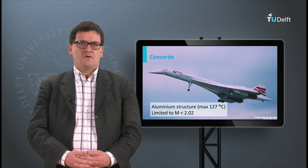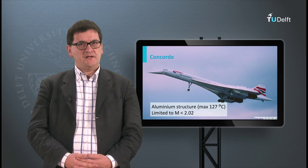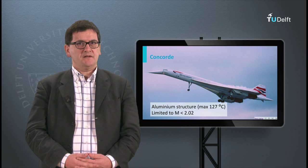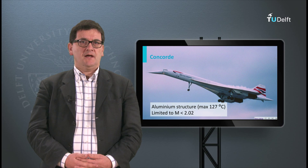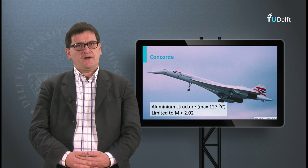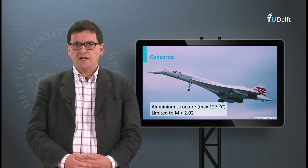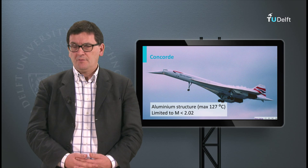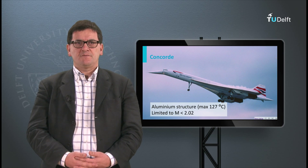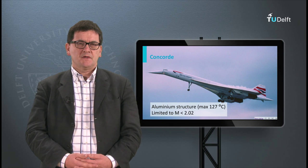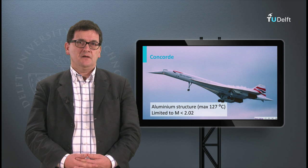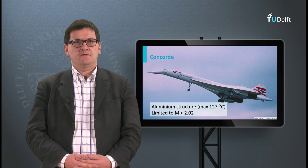This picture shows the Concorde. This aircraft made its first flight in 1969 and was made in a joint venture by France and Great Britain. The Concorde, a civil aircraft flying at Mach 2, was made of aluminium alloys. The choice for aluminium alloys was related to its maximum speed. If the aircraft would have been designed for higher speeds, other materials would have to be selected.